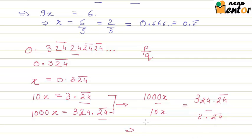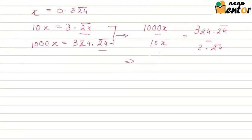Now the left hand side becomes 990x while the right hand side is 321. You can see that the repeating part is eliminated.